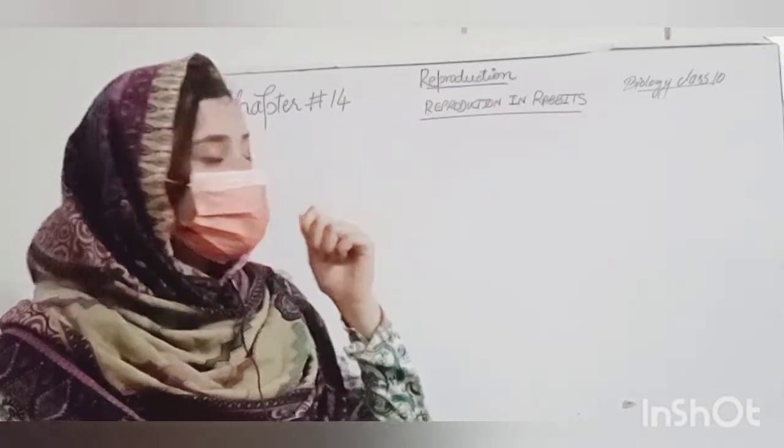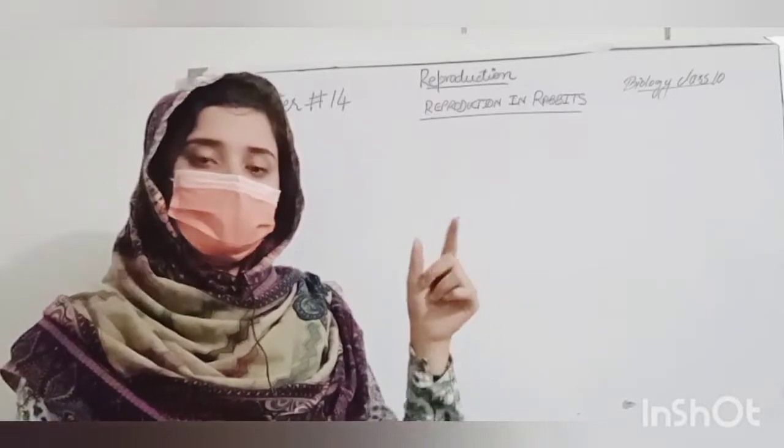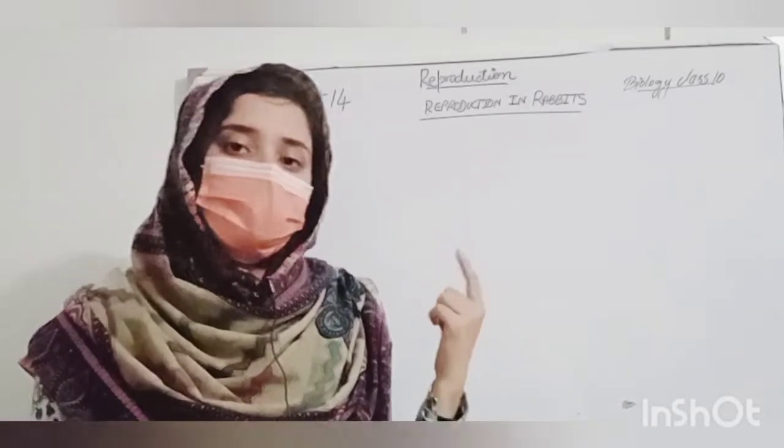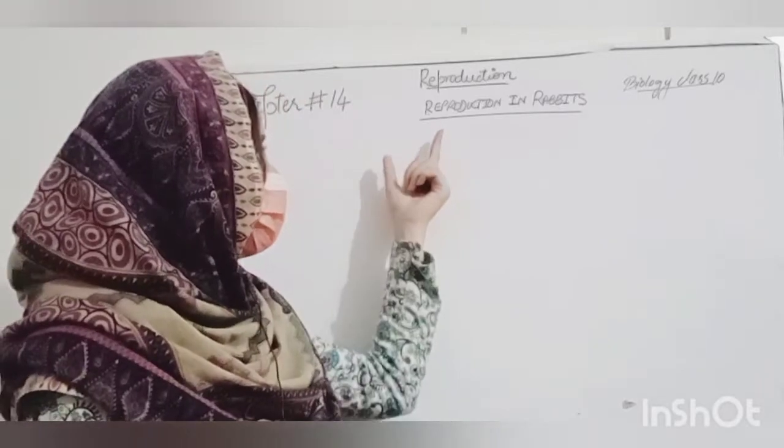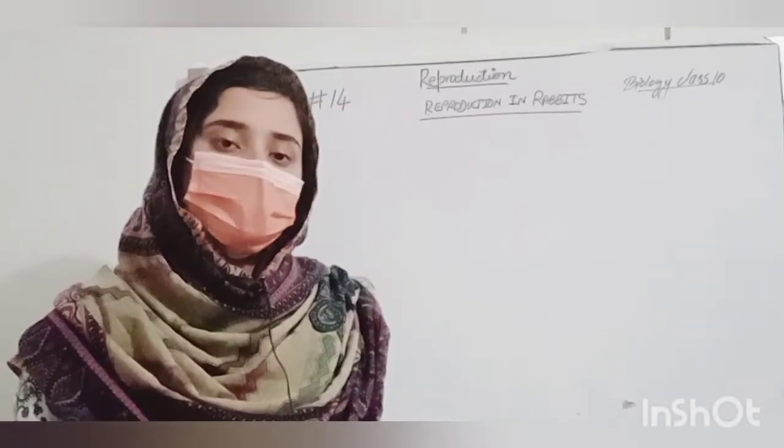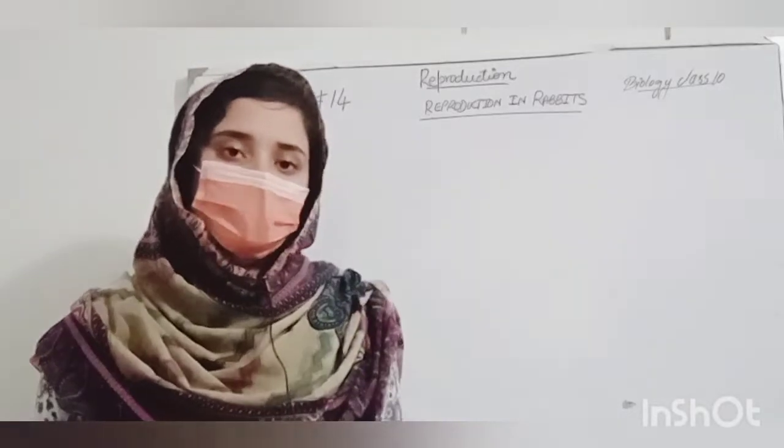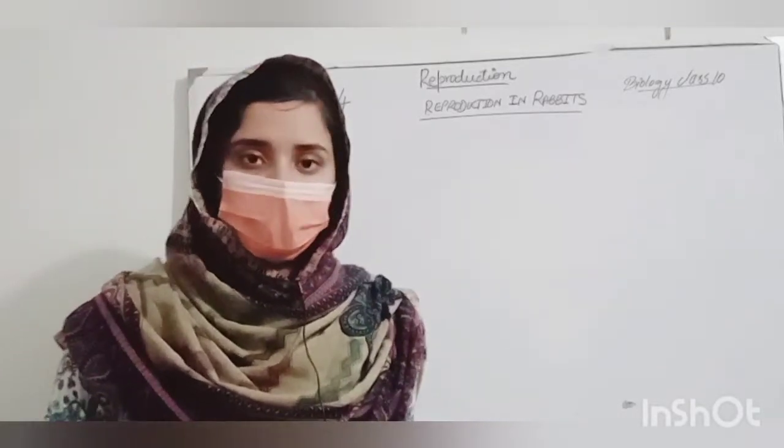Before we have reproduction, sexual reproduction, sexual reproduction in plants and animals. Today we will study reproduction in rabbits. Reproduction in rabbits, we start reproduction in rabbits, male reproductive system and female reproductive system.